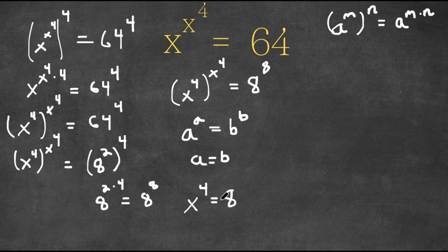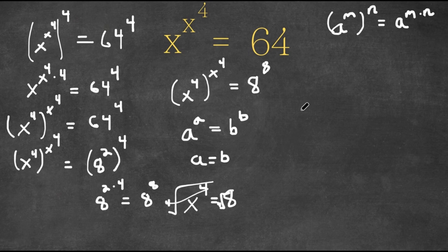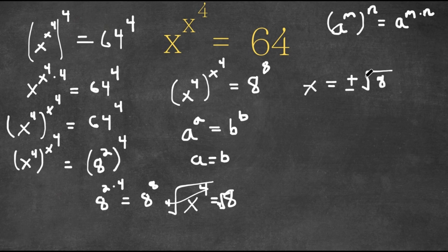So now we simply have a simple equation. To cancel out this power, I'm going to take the fourth root on both sides. These two cancel out and I get x is equal to positive or negative 8 to the 4th root. So this is our answer.